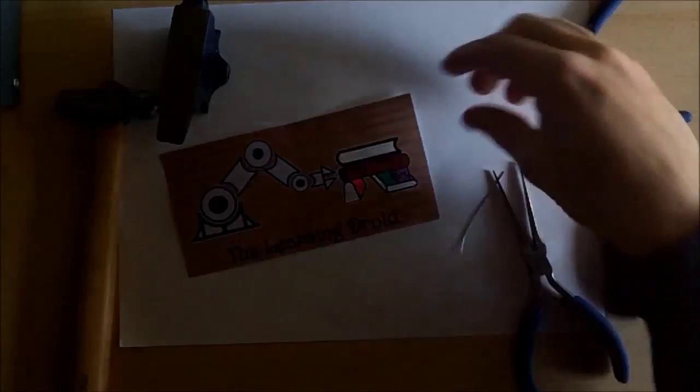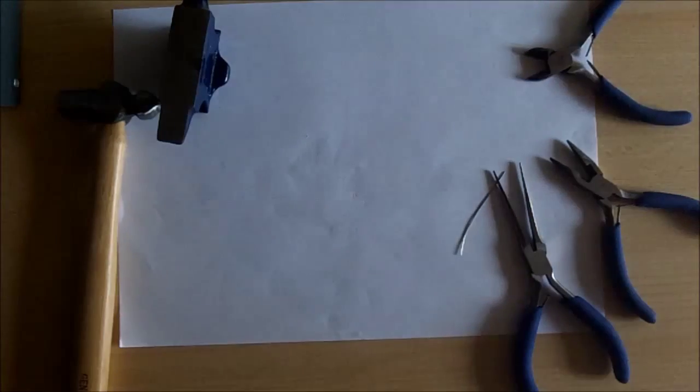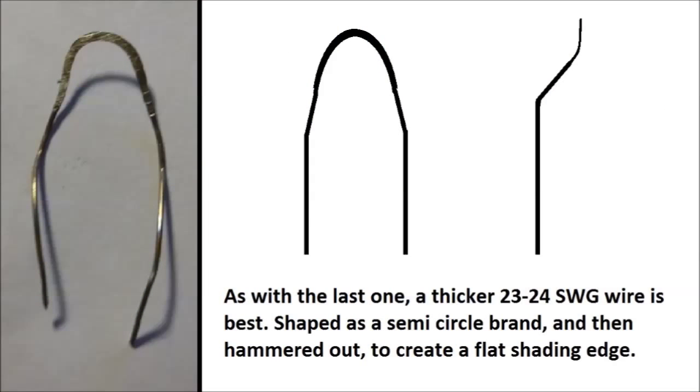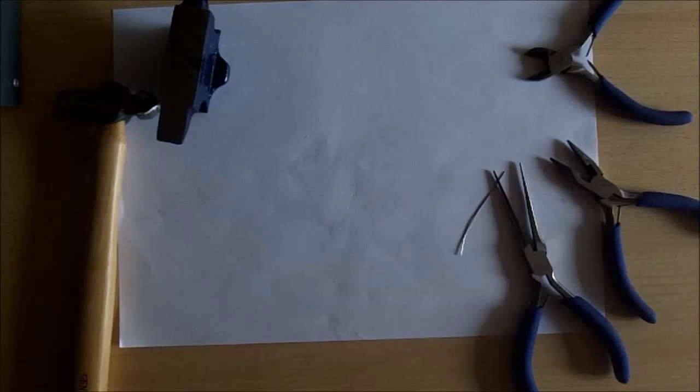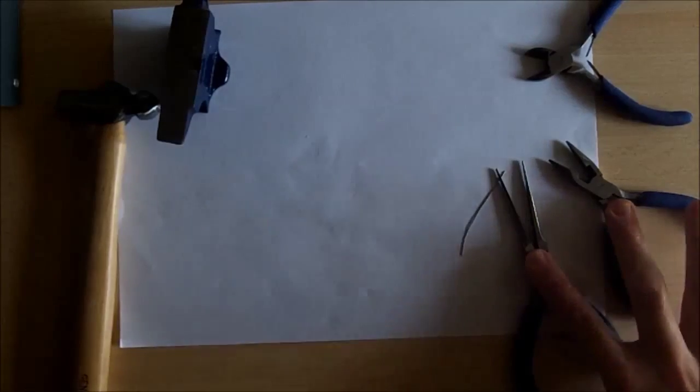Hey guys and welcome back to The Learning Droid. In this video we're going to have a look at something very similar to the detail shading point called the semi-hoop or semi-circle shading point. Same tools we needed for the last one: we need the pliers for shaping, the same pliers we use for shaping in our branding bits video, so you need needle nose, normal, and snippers for cutting the wire.